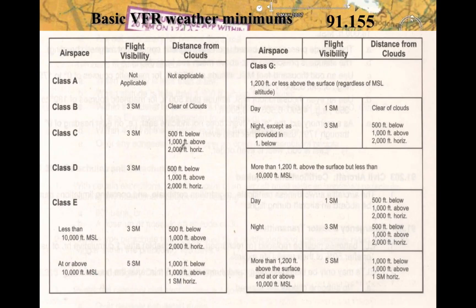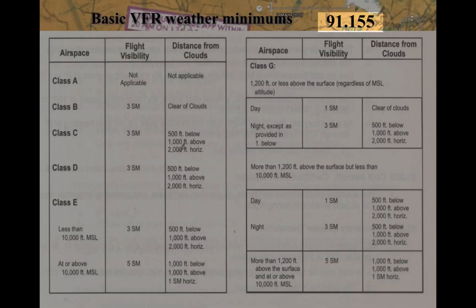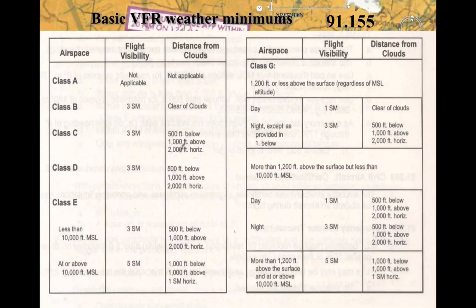All these weather minimums come from the regulations in Part 91 — specifically 91.155 — and it looks just like this if you have your FARs. Part 61 is about certification and Part 91 is about operating rules. Now in Class G, I specifically saved that for last because it's a little more complicated — as you can see, it takes up a whole half a page.